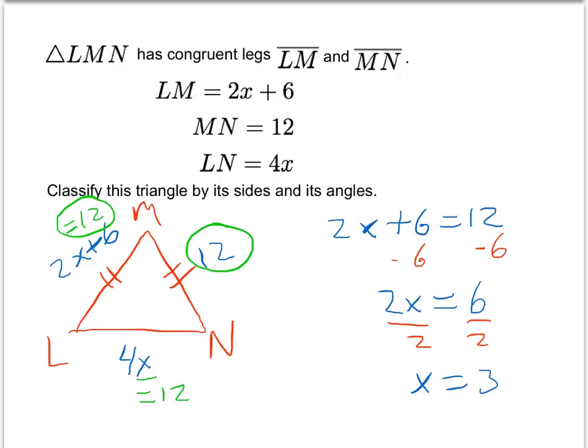And so when we go to classify this triangle by its sides and its angles, we see not only is this an isosceles triangle, it's actually equilateral.